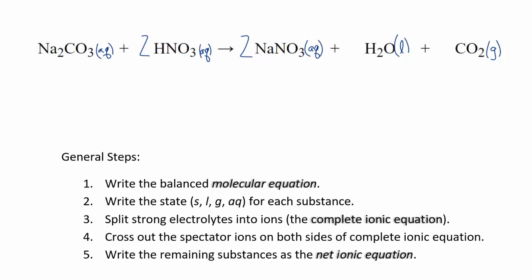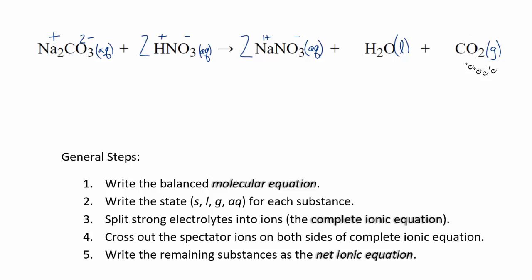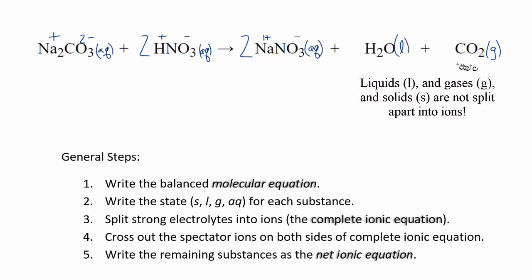Now we split the strong electrolytes into ions for the complete ionic equation. For sodium, group 1 gives a 1+ charge. Carbonate (CO₃²⁻) is a polyatomic ion — you either memorize it or look it up on a table of common polyatomic ions. Hydrogen is 1+, nitrate (NO₃⁻) is 1−. On the product side, sodium is 1+ and nitrate is 1−. Water (liquid) and CO₂ (gas) stay together — we don't split those.